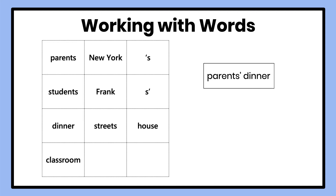Let's look at if we made parents' dinner. If we look at the two words together — parents' dinner — it's looking like we have a dinner that belongs to our parents. When we add an apostrophe and an S to a plural noun ending in S, it means that something belongs to those people or things, and it's called a possessive. Because when something is plural, like parents, and already has an S at the end, it's not necessary to add another S.